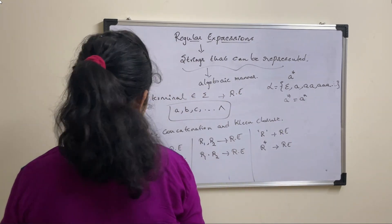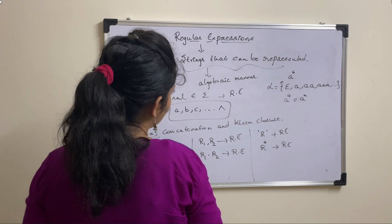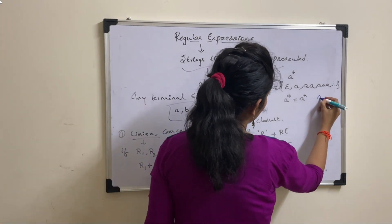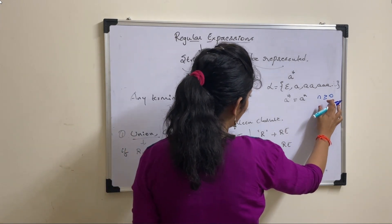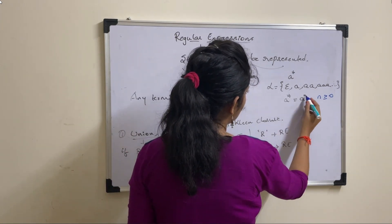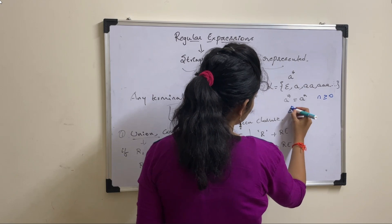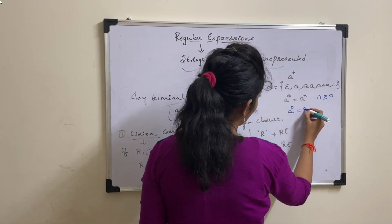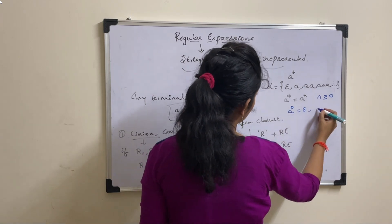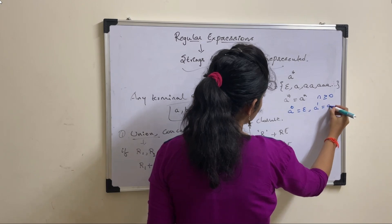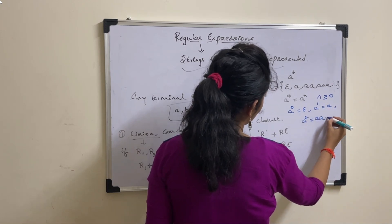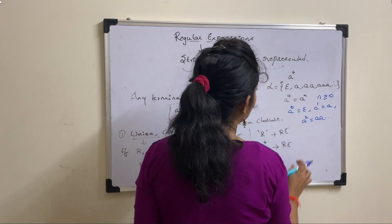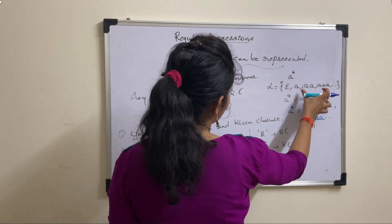Let us take A star equal to A power N, where N value is greater than or equal to 0. Now, start substituting values of N in place of this A power N. A power 0 which is nothing but epsilon, next A power 1 is A, A square is AA and so on. In this way we will get these strings.